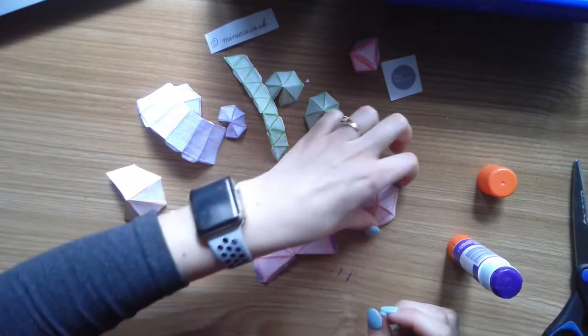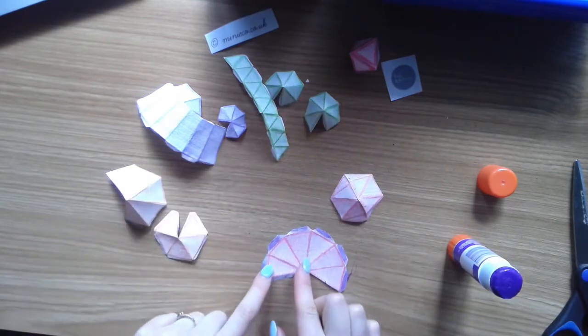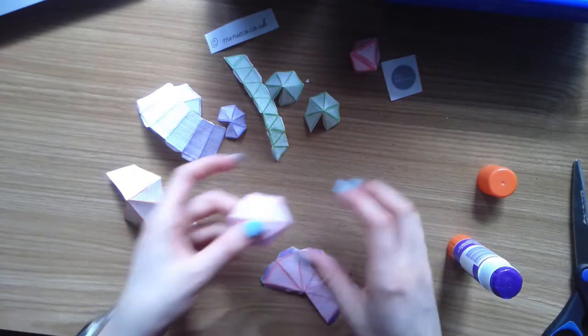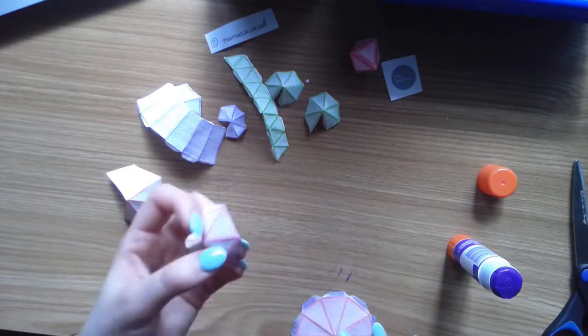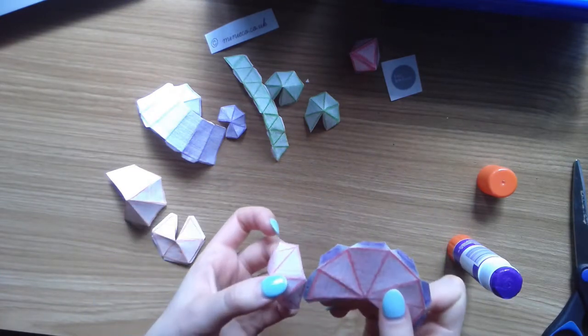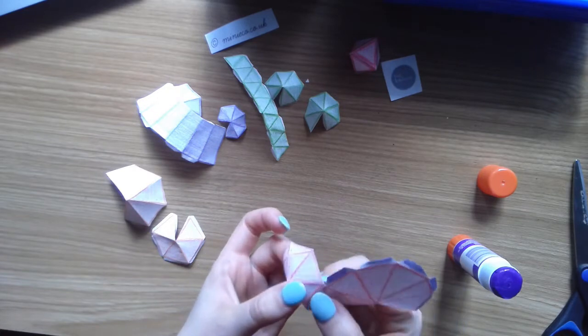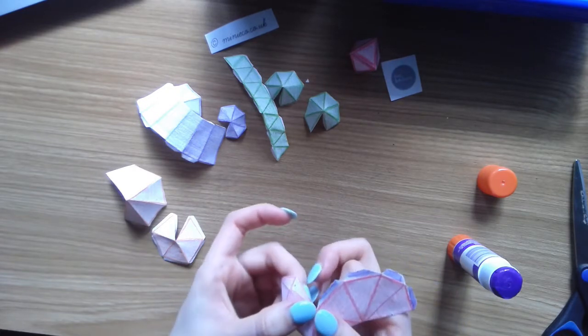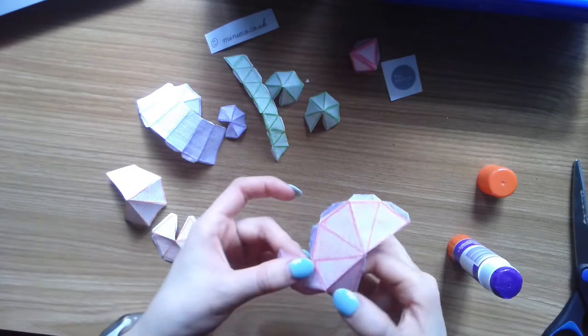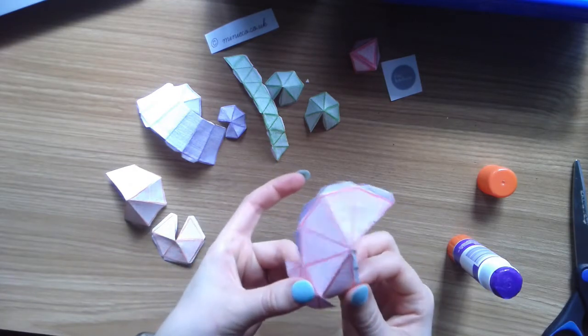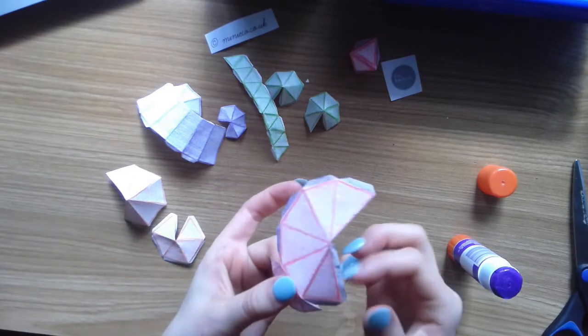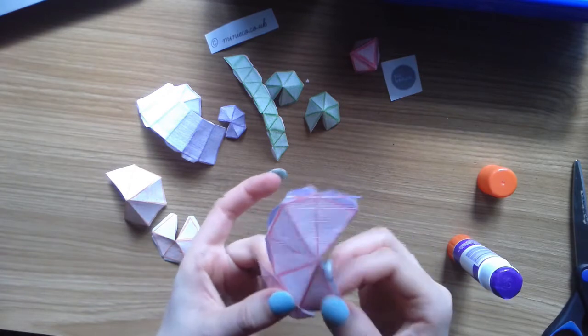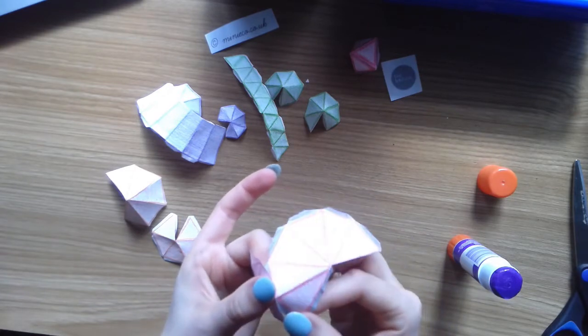And then we're going to find where number six is. There's a little dot, and you're going to line it up with number six, now that this is dried for a little bit, and you're going to glue, and then glue the next one. And kind of go in a circle, gluing. Make sure to count to 10.